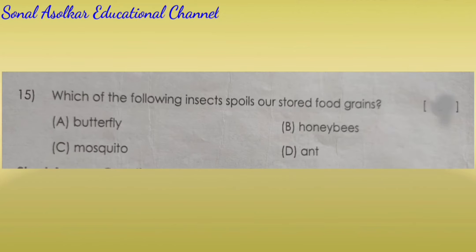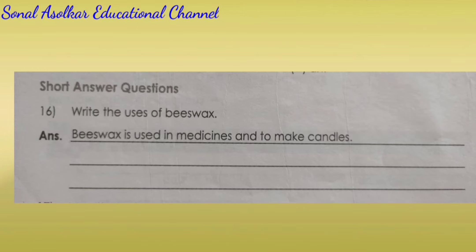Question number 15. Which of the following insects spoil our stored food grains? Option A. Butterfly. Option B. Honeybees. Option C. Mosquito. Option D. Ant. The correct answer is option D. Ant. Short answer question. Write the uses of beeswax. Answer: Beeswax is used in medicine and to make candles.